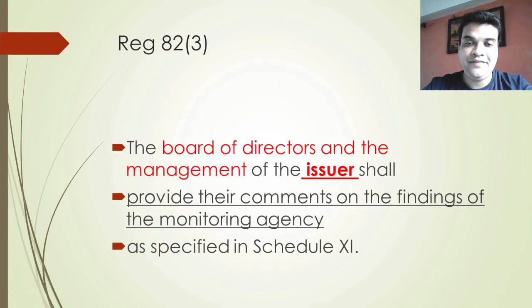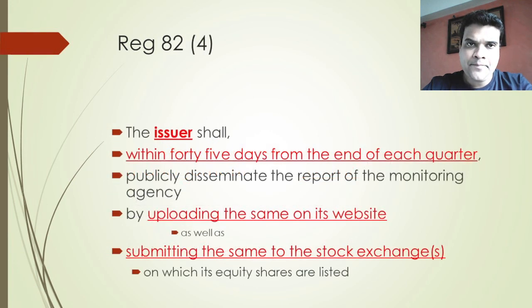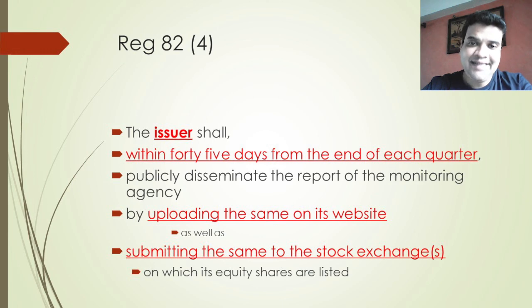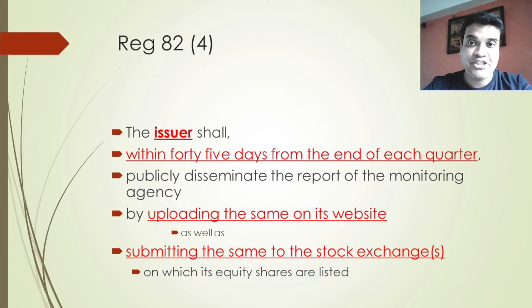Regulation 82(3) states that the board of directors and the management of the issuer shall provide their comments on the findings of the monitoring agency as specified in Schedule 11. Regulation 82(4) states that the issuer shall, within 45 days from the end of each quarter, publicly disseminate the report of the monitoring agency by uploading it on its website and sending it to the stock exchange on which its equity shares are listed.